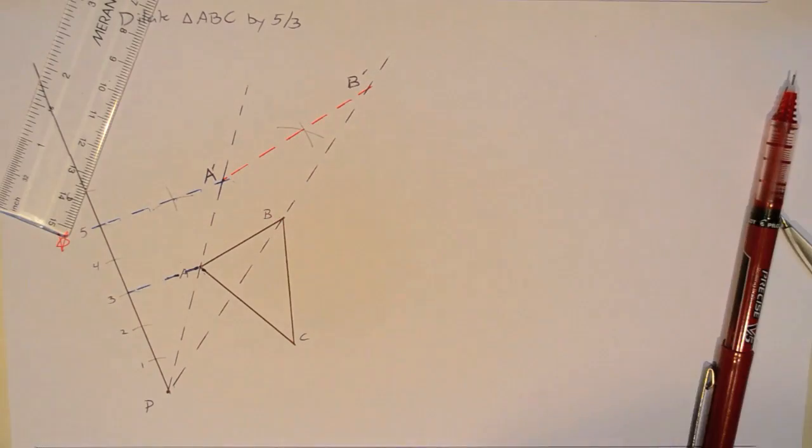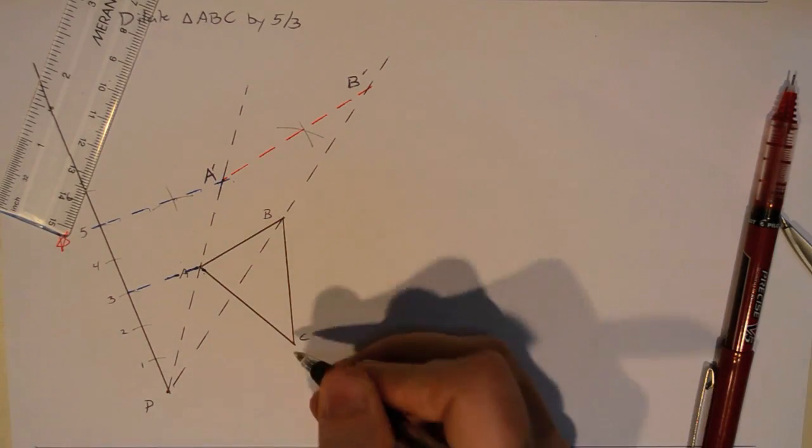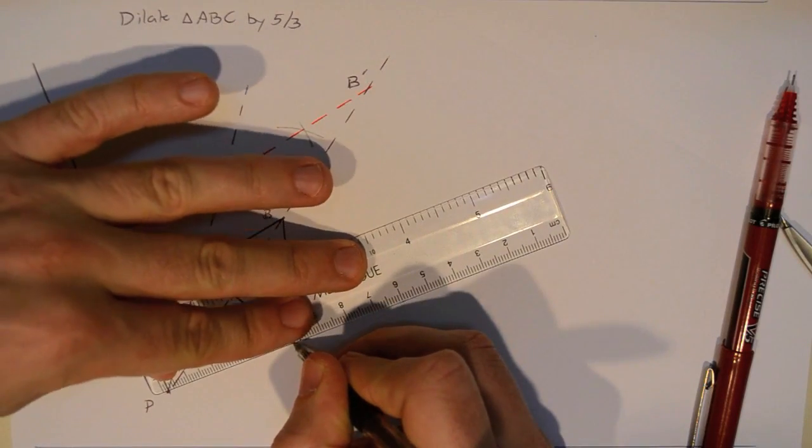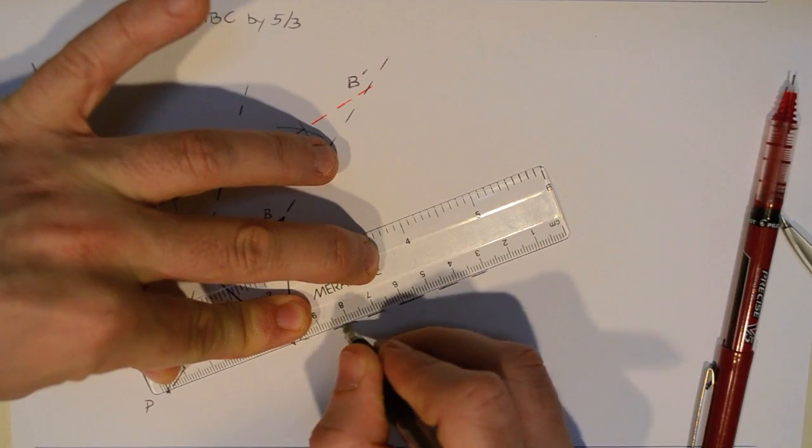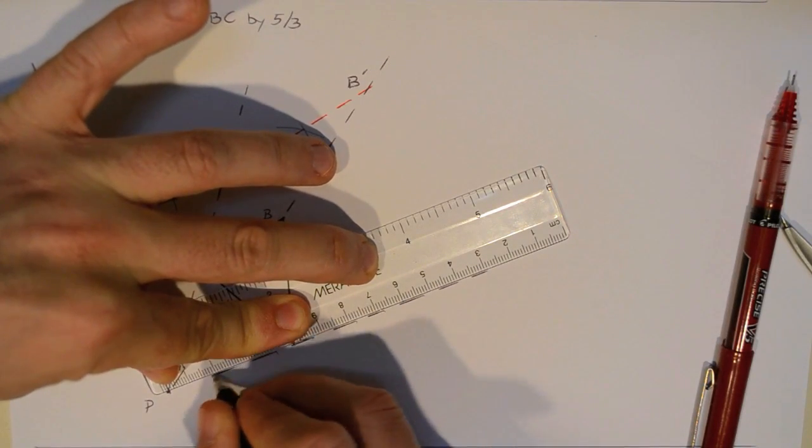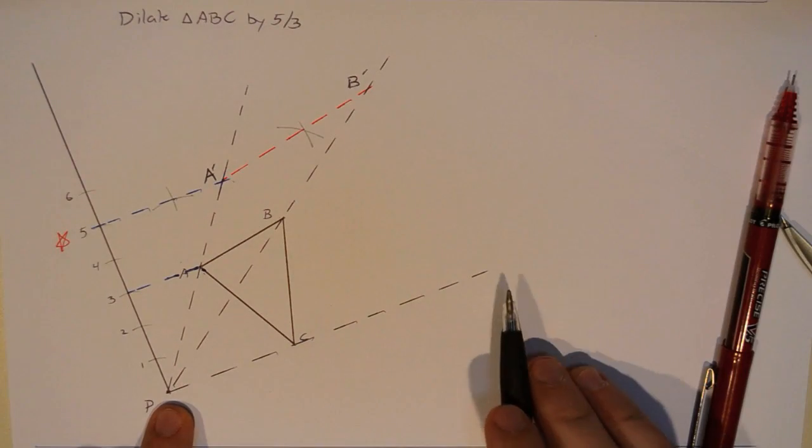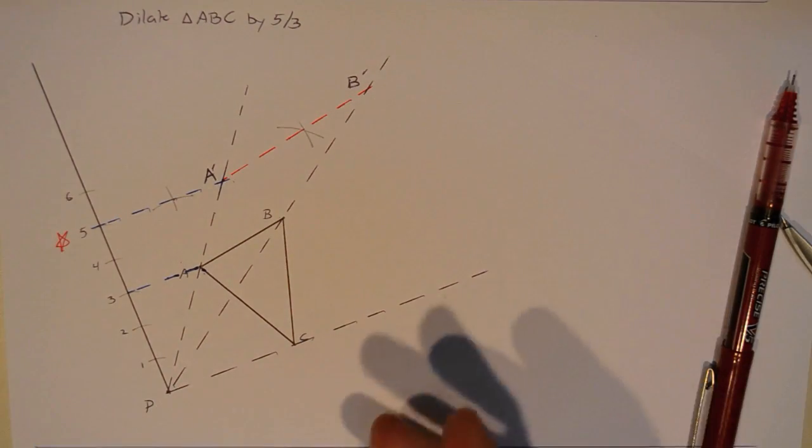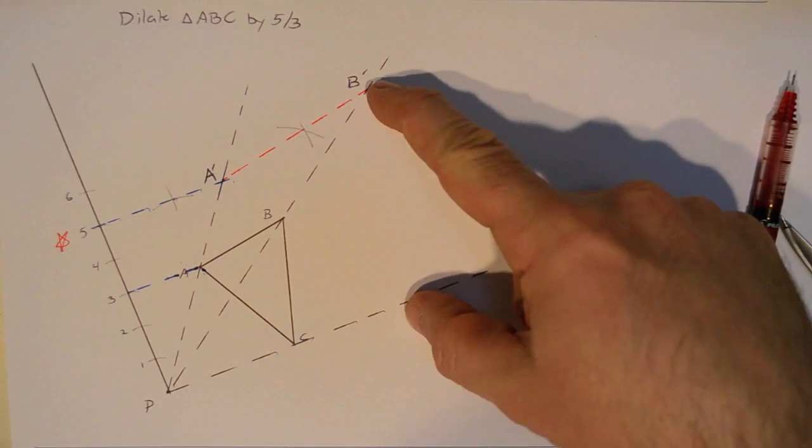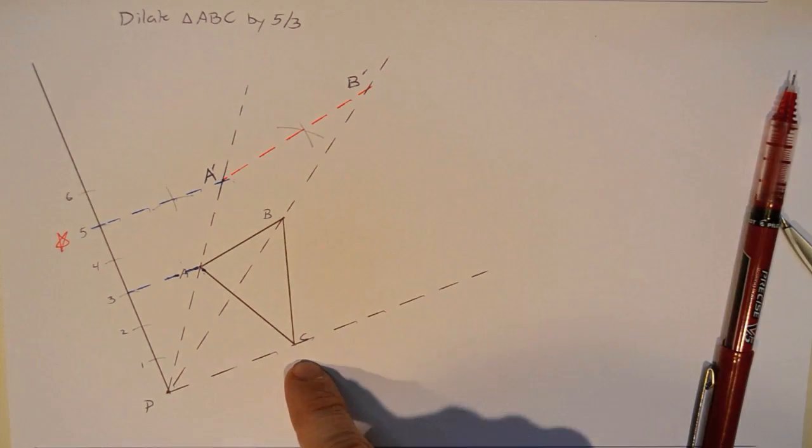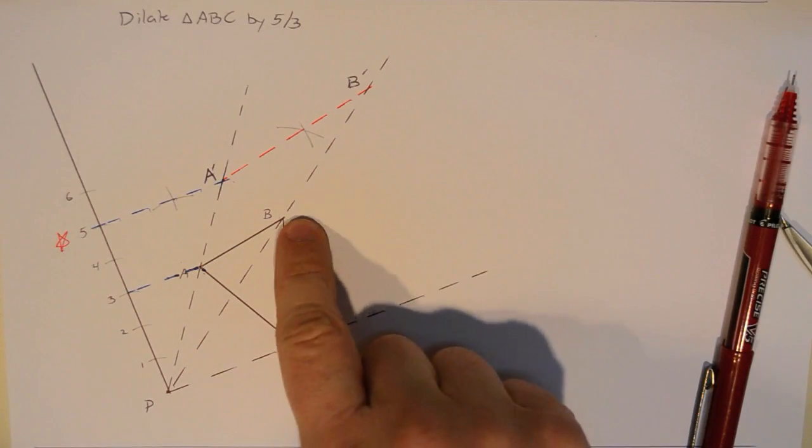So I got around this whole ratio construction for the second point by just using the fact that A prime, B prime has to be parallel to AB. So I locate it using a parallel construction, and that's where point B prime is going to be. Yep, looks good. So now I want to find point C prime. And I'm going to do exactly the same thing. I know that C prime has to live somewhere on the line from P to C. So I'm going to extend that line from P through C. And the only question is where exactly on this line is C prime? Well, just like A prime, B prime had to be parallel to AB, it's also true that B prime, C prime has to be parallel to BC.